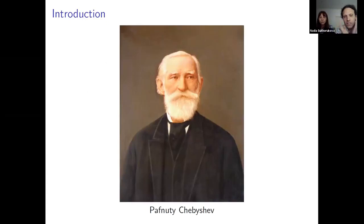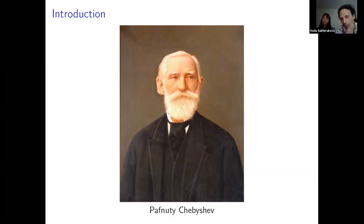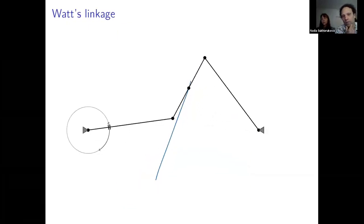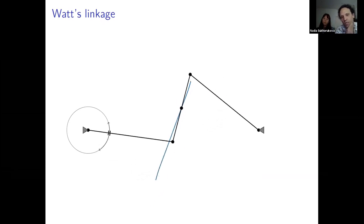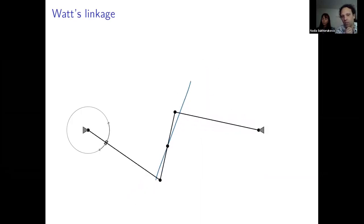The story starts with another famous Russian mathematician who left us quite a few interesting results still used today — this was around the 1850s, during the industrial revolution across Europe. The industrial revolution brought a lot of mathematical problems that people don't talk much about now but were very important at the time.